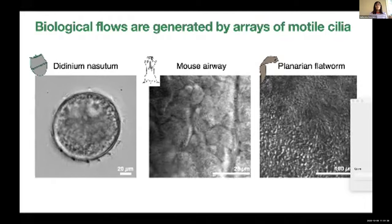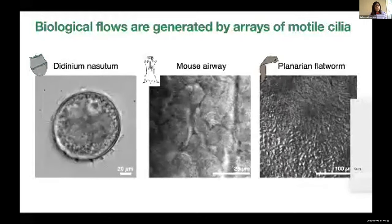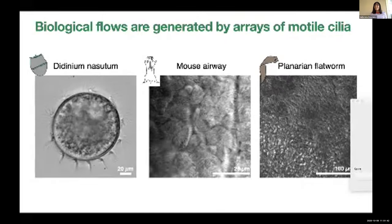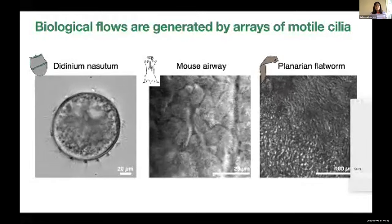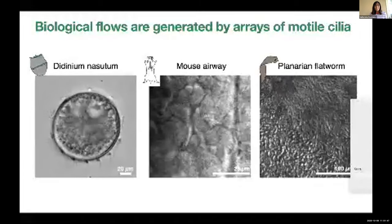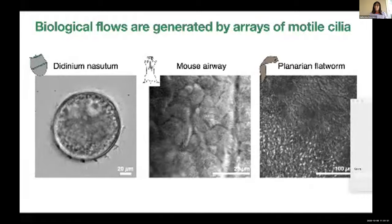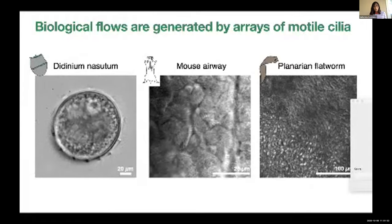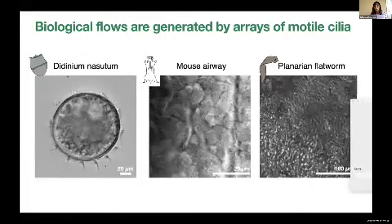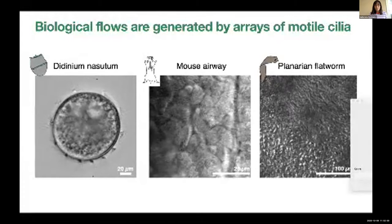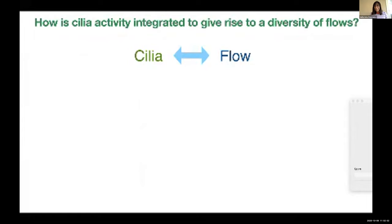From these videos you can appreciate that the structure of how the cilia are arranged and their contexts are very different. I'm really interested in understanding how, by having the same active unit — one cilium — but patterning it in different ways spatially and temporally, you can control the flow topologies you generate and generate flows in very different fluid environments. This is what my lab is interested in: the relationship between cilia patterning and flow patterning.